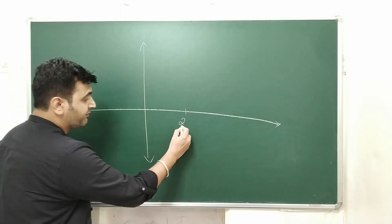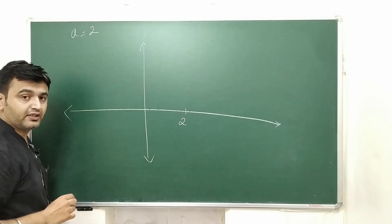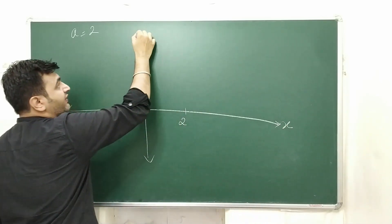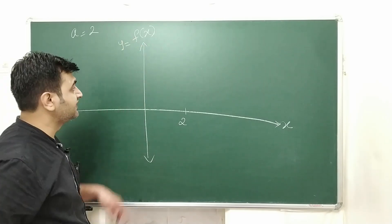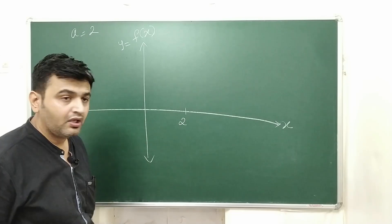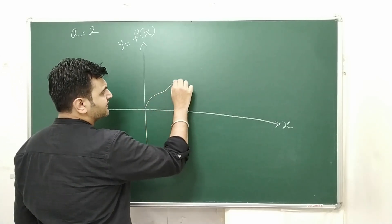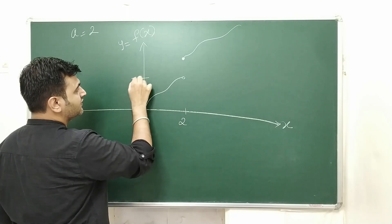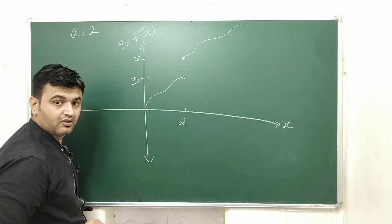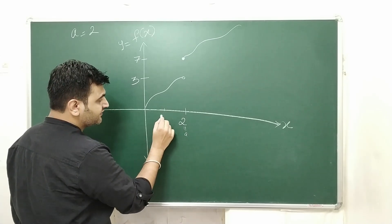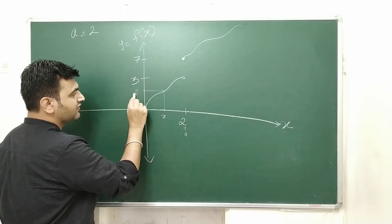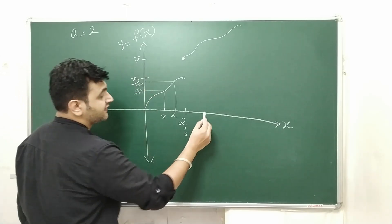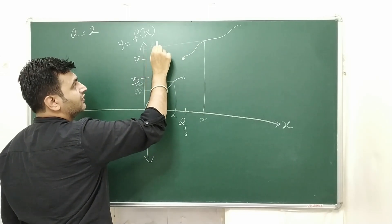Now let's see examples one by one so the picture will be clear. This is my two-dimensional plane, and for simplicity let me take a equal to 2. We need to find the limit of the function as X approaches 2. This is my x-axis and this is f of X — we usually call it y equal to f of X — so these are the images of the function and this is the domain.